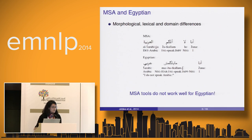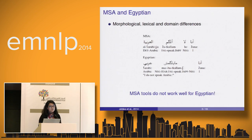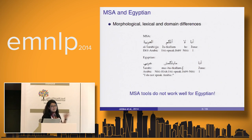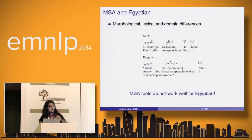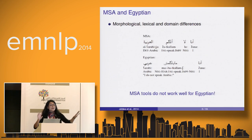So what is the solution? We thought of using MSA as a pivot language to translate from English into Egyptian, but not in a direct way. Instead, we adapt the MSA output to make it as close as possible to Egyptian text. That's why we call our work a domain and dialect adaptation system.